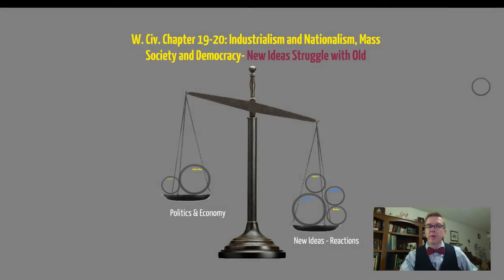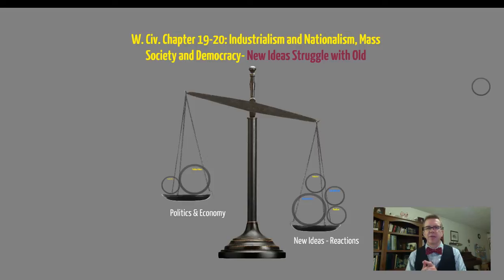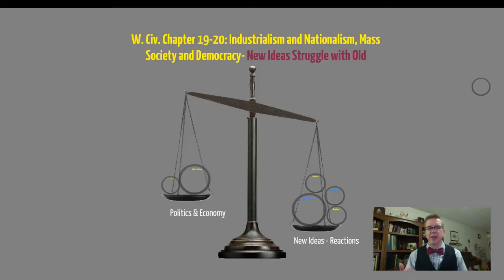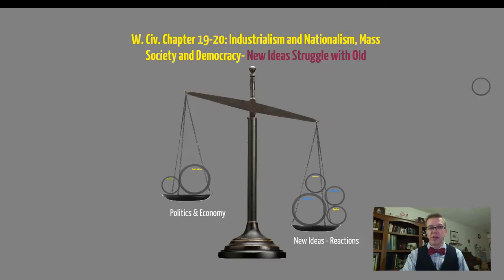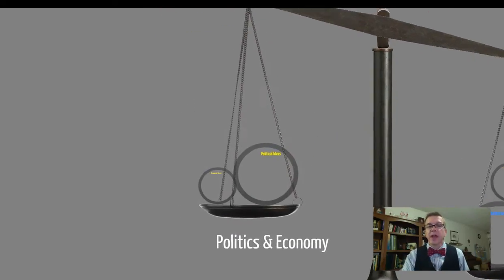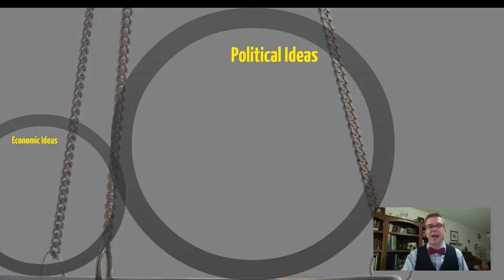Hi guys, Mr. Pulley here for Fieldcrest's Western Civilization History. We're looking at chapters 19 and 20, Industrialism and Nationalism, and how those two things are going to affect things later on down the road. Also Mass Society, caused by some of these new inventions, and Democracy. What we're going to see here really is a struggle between new ideas versus old ideas. We're going to look at two areas in this video: Politics and the Economy, and new social thinking ideas and the reactions to those ideas.